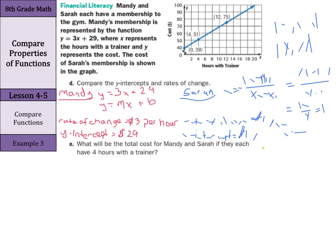So, in Mandy and Sarah's case, the rate of change is the same. They're both being charged $3 per hour. But the y-intercept represents the initial cost, and Sarah's $39 y-intercept shows a higher initial cost than Mandy's.